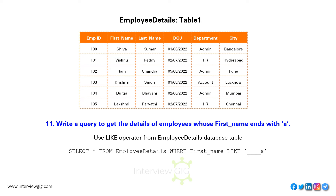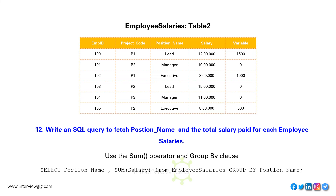Write a query to get the details of employees whose first name ends with A. Write an SQL query to fetch the portion name and total salary paid for each employee in employee salaries. Use the SUM operator and GROUP BY clause. SELECT portion_name, SUM(salary) FROM employee_salaries GROUP BY portion_name.